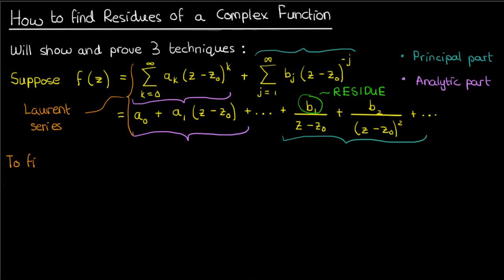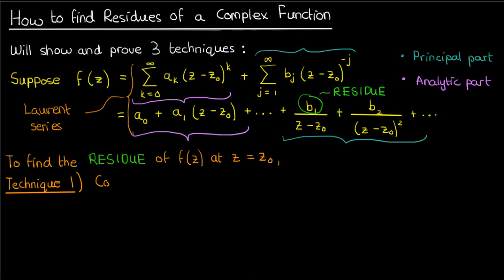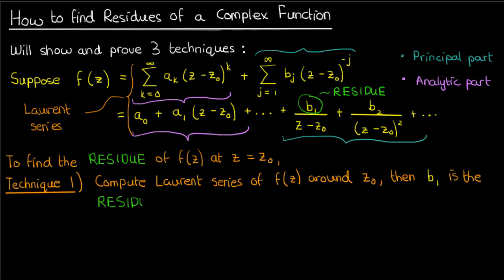This gives rise to the first technique used to find the residue of f at z0, which involves finding the Laurent expansion of f around z0 and then extracting the b1 coefficient. I don't really need to prove this since it is, after all, the definition of the residue, so let's skip straight to an example.